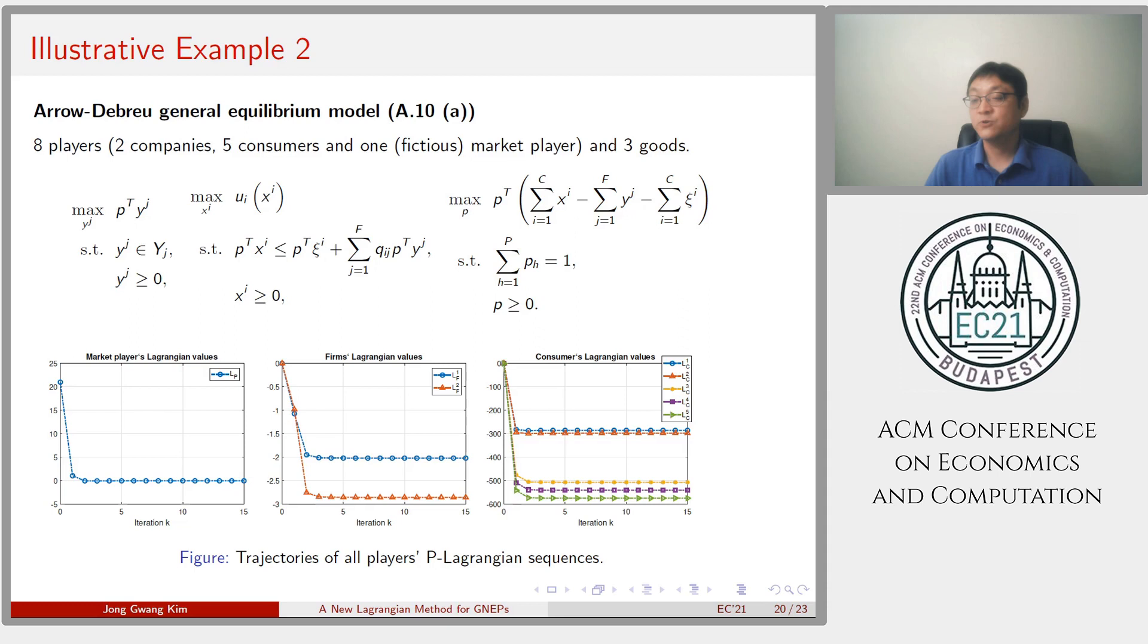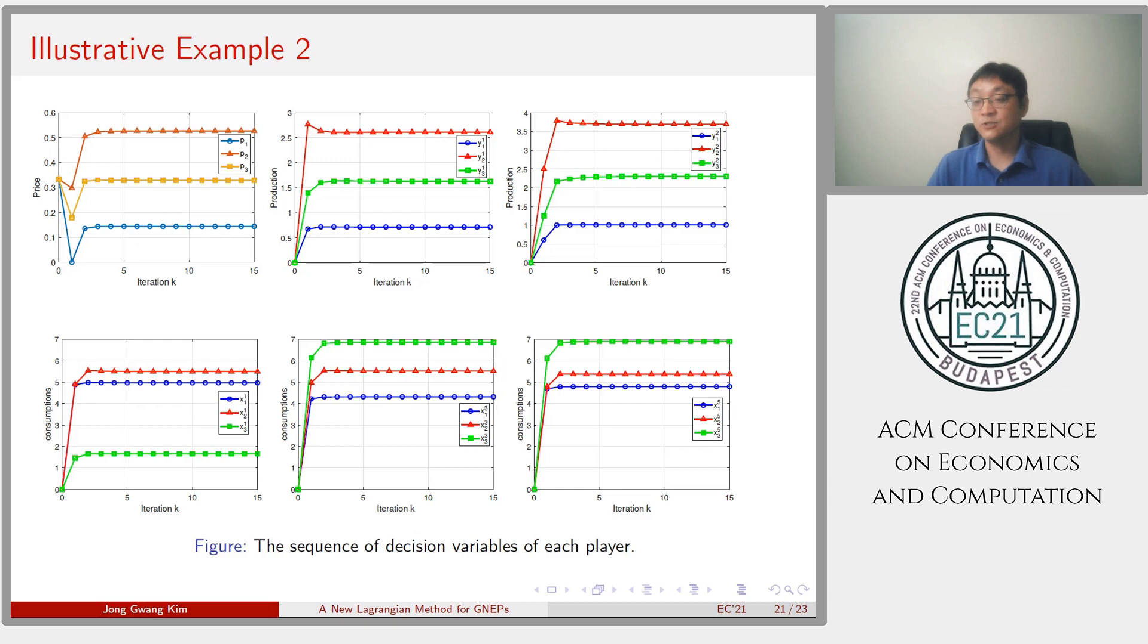Next, let's look at the Arrow-Debreu equilibrium example briefly. In this example, there are eight players. Two companies, five customers, and one fictitious market player, who sets price for clearing market. First, the first one corresponds to company optimization problem. Second corresponds to customers' problem. And the last one is market players' problem. The numerical results of this example also verify our theoretical findings. All Lagrangians are decreasing and convergent to finite values. We also see that the generated sequence converges to Walrasian equilibrium.